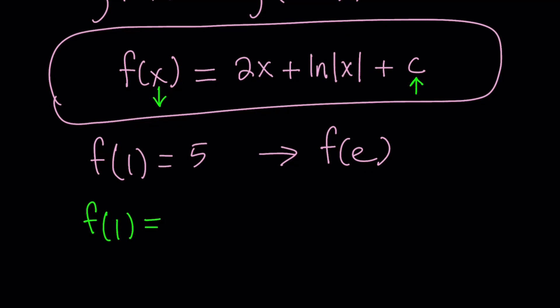So f of 1 becomes 2 times 1 plus ln absolute value of 1, which is ln 1 plus c. ln 1 is equal to 0 by definition of logs. Natural log.